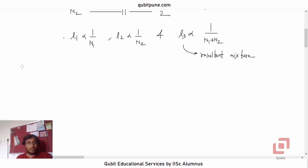Suppose the constant of proportionality is a small a. So we now have L1 equal to a by N1, L2 equal to a by N2, and L3 being equal to a by N1 plus N2.